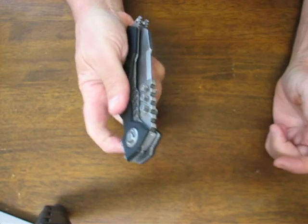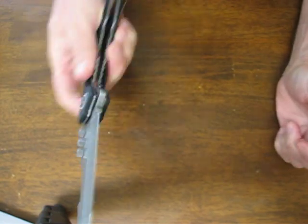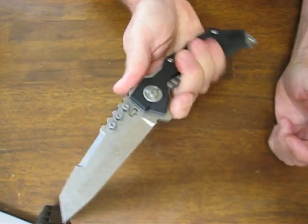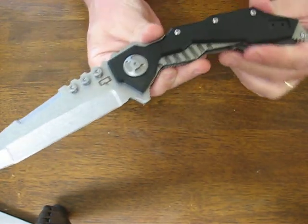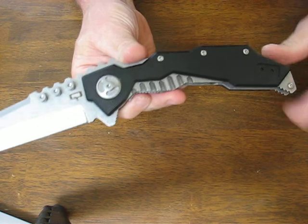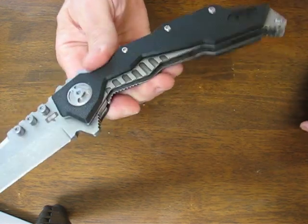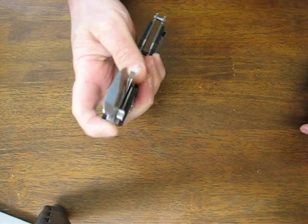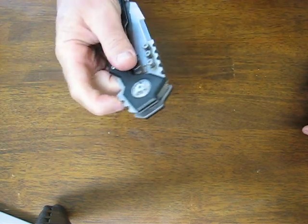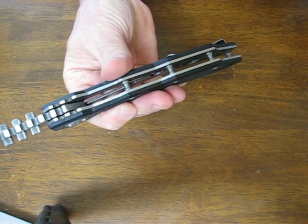Very impressive full-size folder. The blade length again is 5 inches with a 3/16th inch thickness. The handle length when it's closed measures in at 7.5 inches and the handle thickness is 0.750.